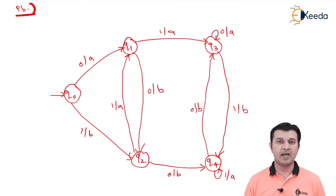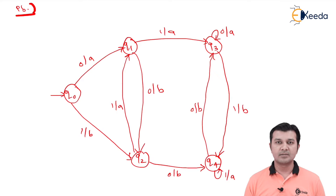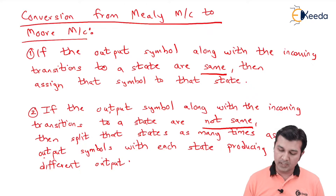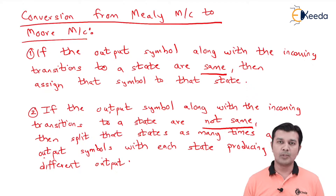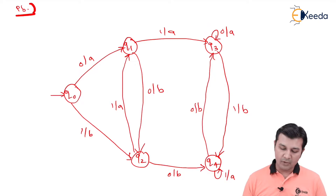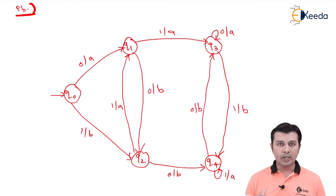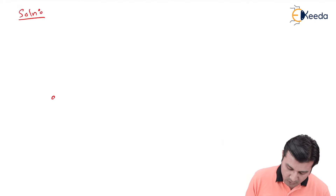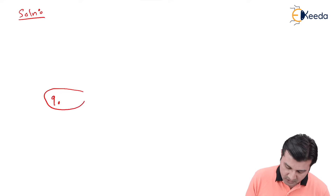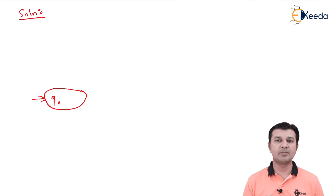Now let's go to step one. These steps need not be applied in a strictly sequential manner — it purely depends on the problem. For state q0, do I have any incoming transitions? No. Since there are no incoming transitions to q0, I will keep q0 as it is. Since it is going to be a Moore machine, I am leaving some space to add the output later.